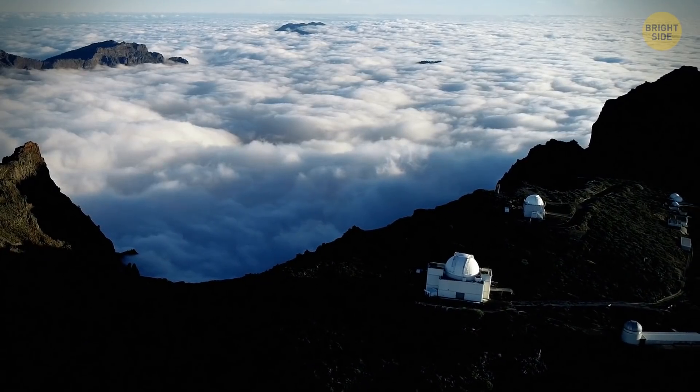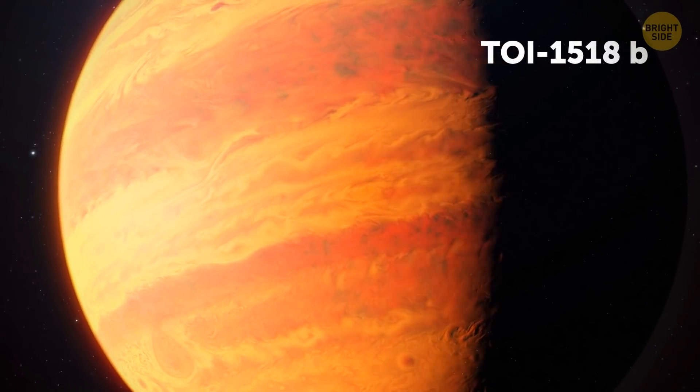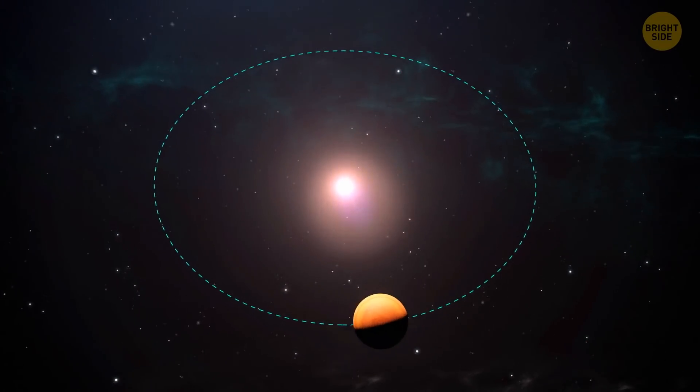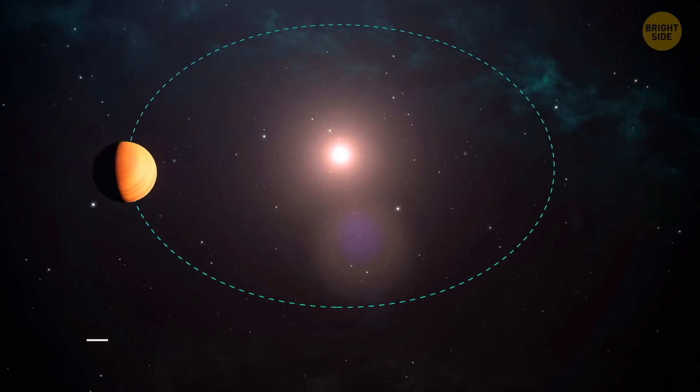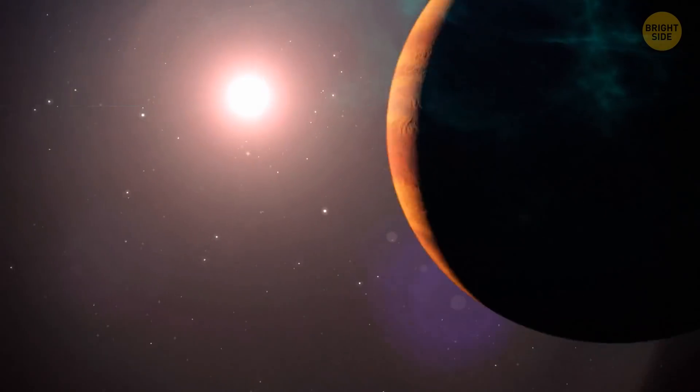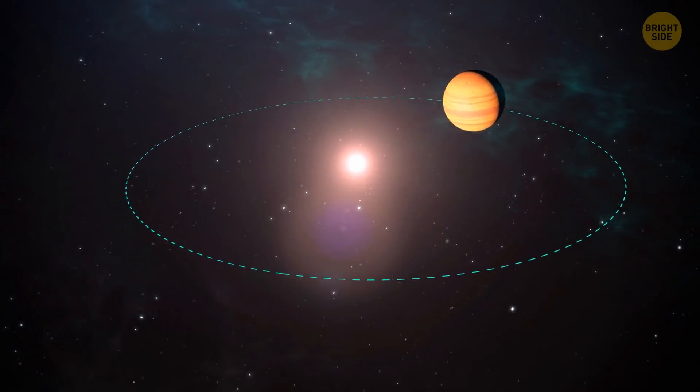On the day of the discovery of the previous planet, scientists also found it had an unusual companion. It's an extra-hot Jupiter with an ultra-tight orbit around its star. The year there lasts only 1.9 Earth days. This planet has a weirdly shaped orbit. Also, it travels in the opposite direction from the rotation of its star.